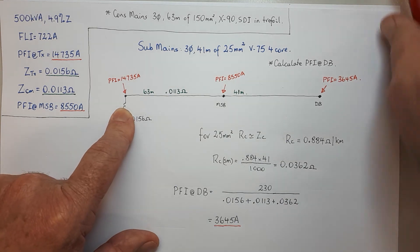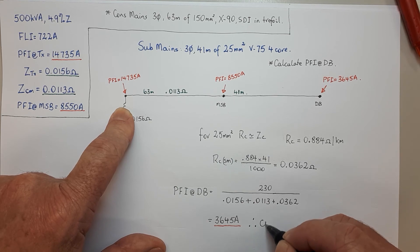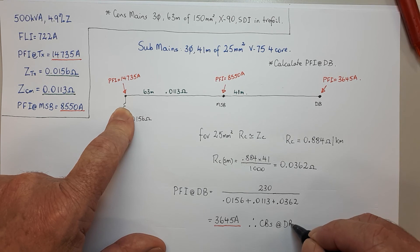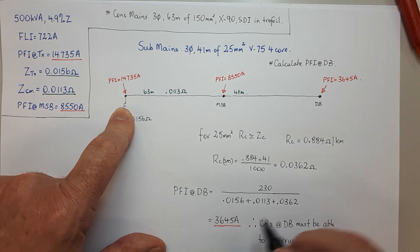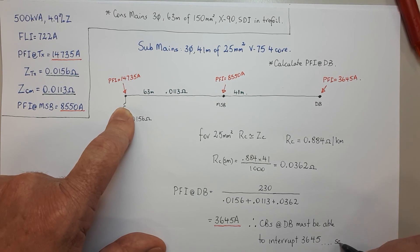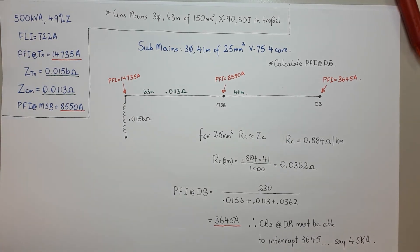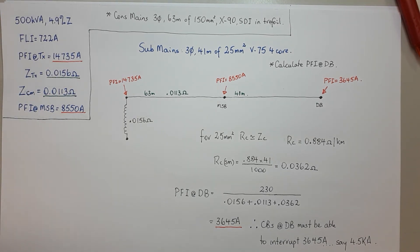Therefore, circuit breakers at the DB must be able to interrupt 3,645 amps, so you'd be looking at say 4.5kA or whatever you pick — it just has to be more than 3,645 amps. And that gets us there, that's everything.